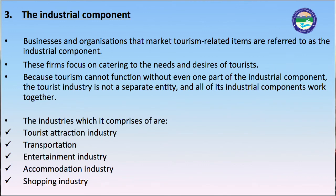Businesses and organizations that market tourism-related items are referred to as the industrial component. These firms focus on catering to the needs and desires of tourists because tourism cannot function without even one part of the industrial component. The tourist industry is not a separate entity, and all of its industrial components work together. The industries it comprises are: tourism attraction industry, transportation industry, entertainment industry, accommodation industry, and shopping industry.